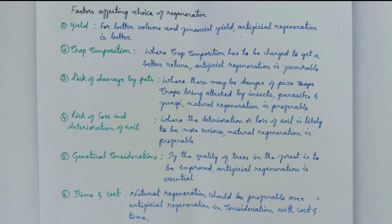Fifth, genetical considerations — if the quality of trees in the forest is to be improved, then artificial regeneration is essential. Sixth, time and cost — natural regeneration should be preferable over artificial regeneration in consideration with cost and time. This completes the third question.